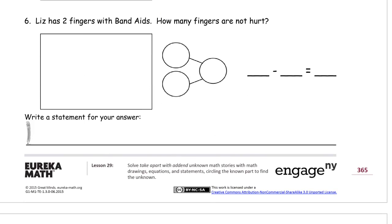And number six, Liz has two fingers with band-aids. How many fingers are not hurt? You're going to have to think about this one just a little bit. It doesn't say how many fingers Liz has, but we can just guess that she has ten like most of us. A thumb, one, two, three, and there's your other hand. One, two, three, four, and there's her thumb. Five. She's got band-aids on two of them. This one here is a band-aid, that one there is a band-aid. So we have ten fingers.